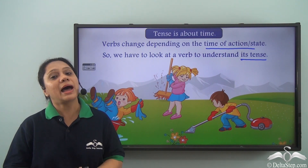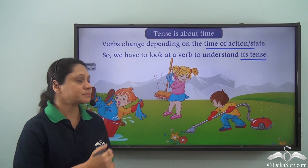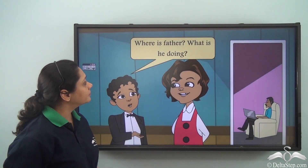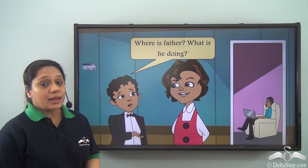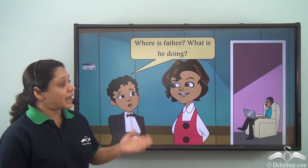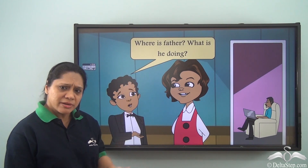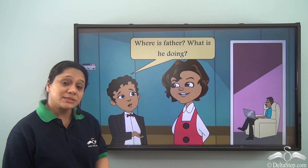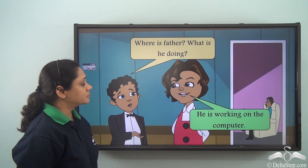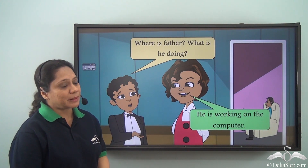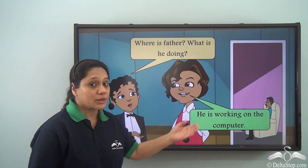Today we will have a look at another kind of tense. This is Ravi. He comes home from school and asks his sister, 'Where is father? What is he doing?' His sister replies, 'He is working on the computer.'